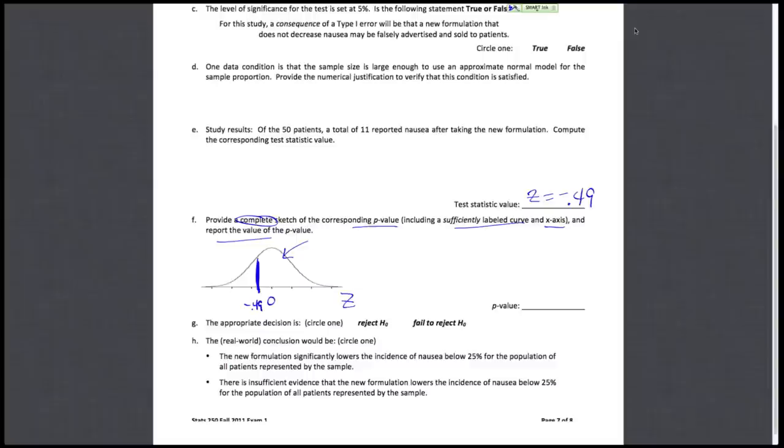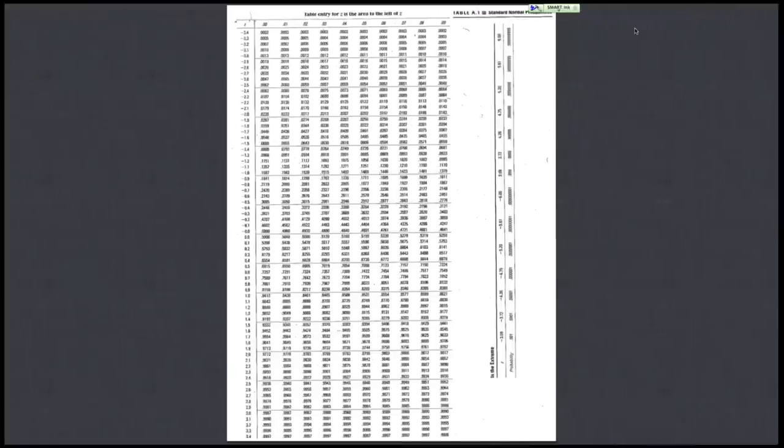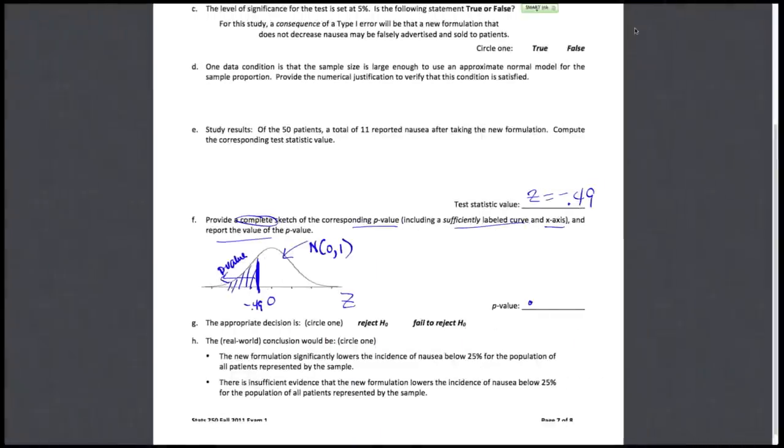As extreme or more extreme should match with that alternative direction, which was to the left. So this represents our p-value—this shaded region, this shaded area to the left of negative 0.49 under the appropriately labeled distribution, which is the standard normal. Now to look up and find that value, we're going to have to go to our z-table, Table A1, and take a look at negative 0.49. So there's the negative 0.4, use the 0.09 column, and get an area to the left of 0.3121. So let's report that here. We don't have to do a 1 minus because we are looking at the area to the left.